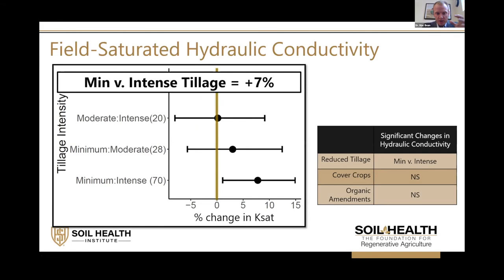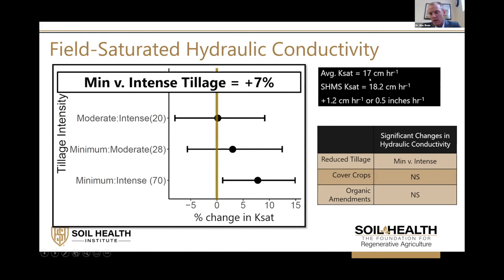We saw about a seven percent increase in the speed of water moving through the saturated soil profile. Applying soil health management practices to our average KSAT would bring it up to 18.2 centimeters per hour — an additional half an inch per hour. So in the spring, with a saturated soil profile and a rainfall event, as long as it doesn't exceed that rate of half an inch per hour, theoretically you wouldn't get any ponding on the soil surface.